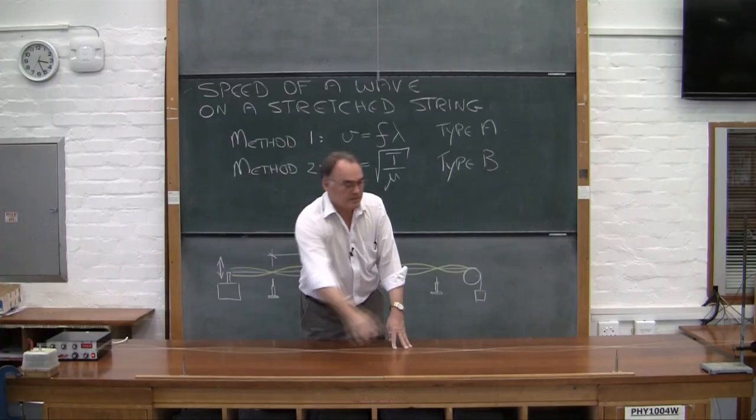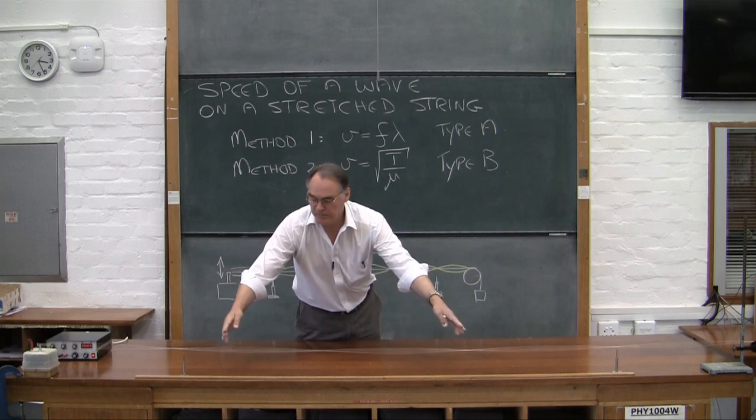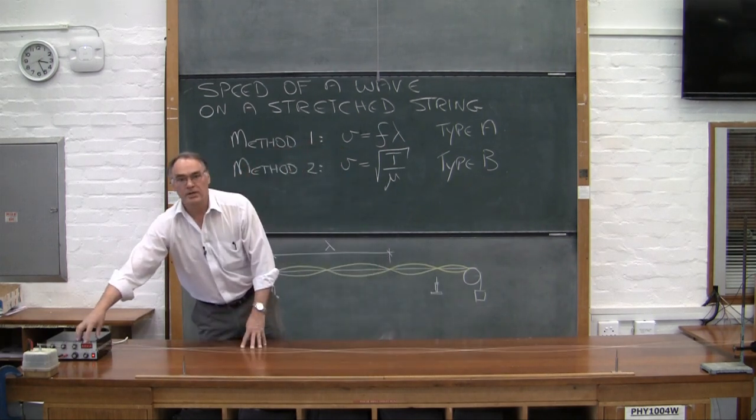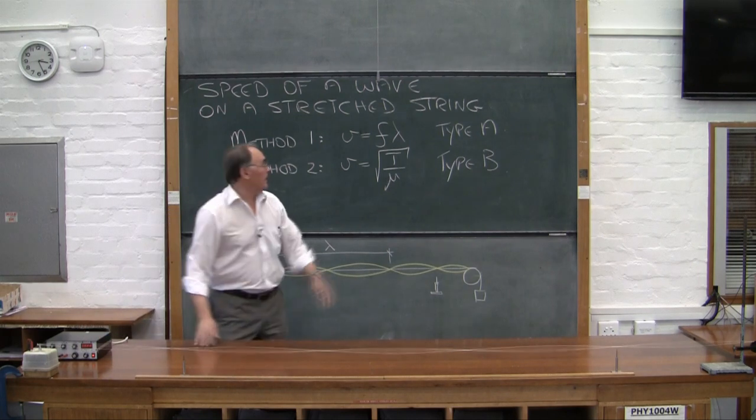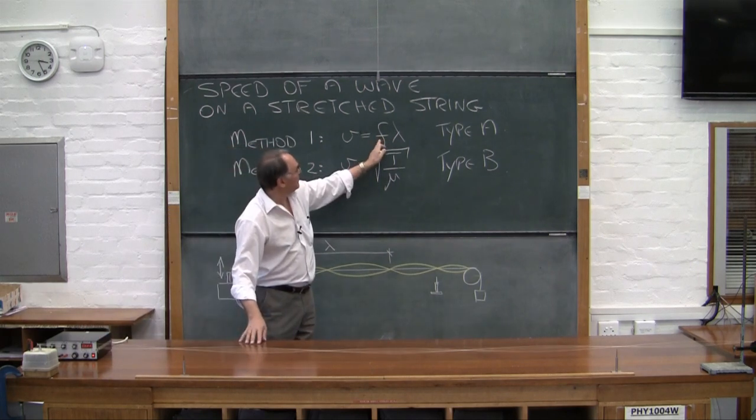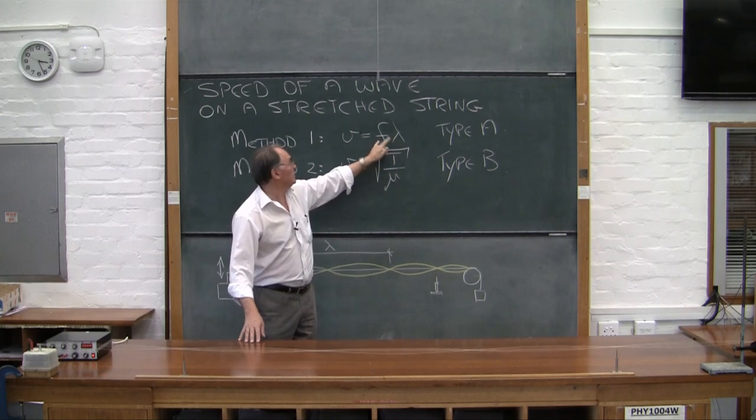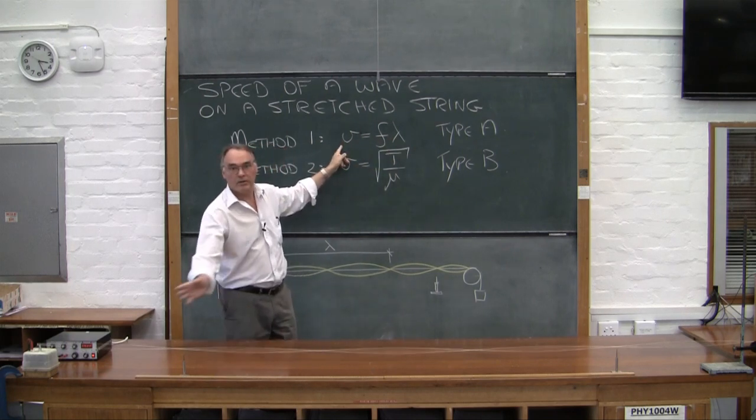Measuring the distance between these two, I can determine the wavelength and I can read the frequency off on the function generator. And in this way, I can collect a family of readings of frequency and wavelength. These will be used to determine the speed of the wave.